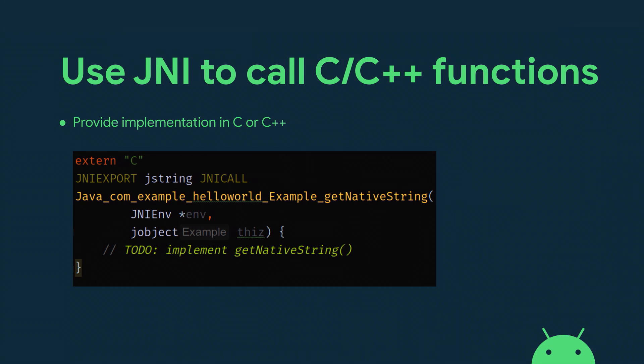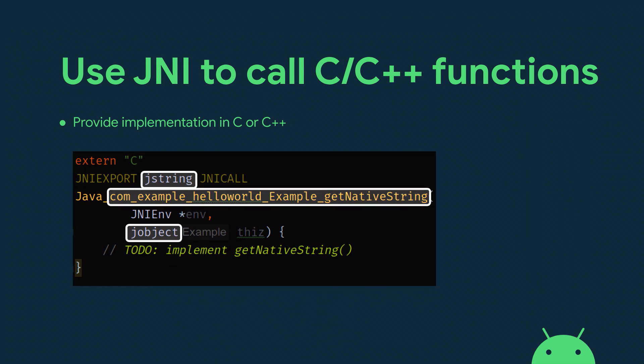First, let's talk about the expanded JNI support. JNI allows developers to call C or C++ functions from Java or Kotlin. To do so, one simply declares an external function in Kotlin or a native method in Java, and then provides the implementation in C or C++. Note that the signature and name of the JNI function definition must match the counterpart in Java and Kotlin according to the JNI spec, otherwise you get a runtime error.